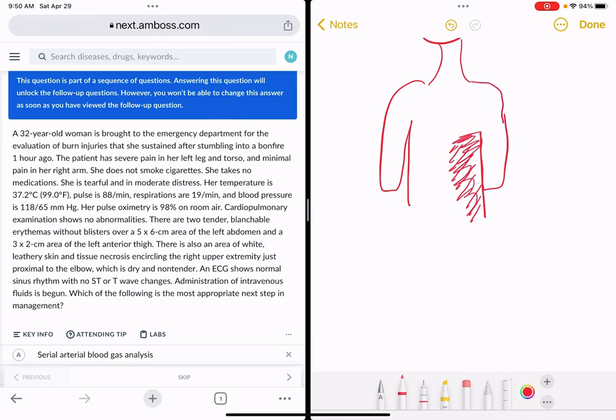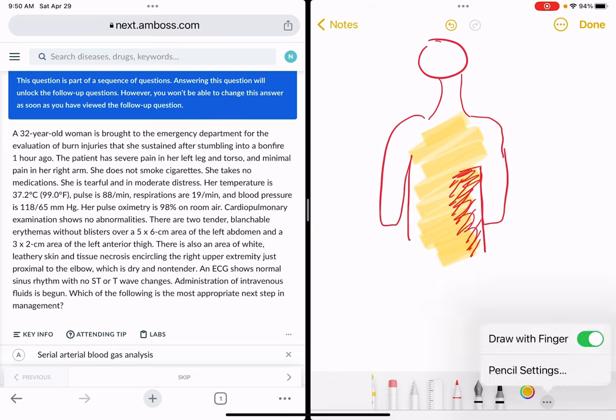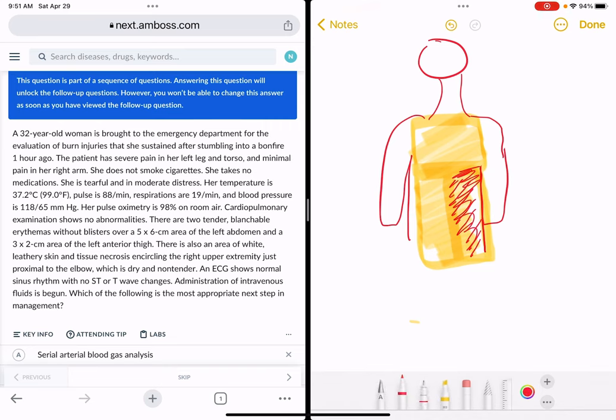We know that according to the rule of nines, the entire front is 18 percent. This patient has on her left abdomen alone. If we consider the abdomen alone, it's gonna be 9 percent. The chest alone is 9 percent. She only has one side of her abdomen, so this is 4.5 percent.